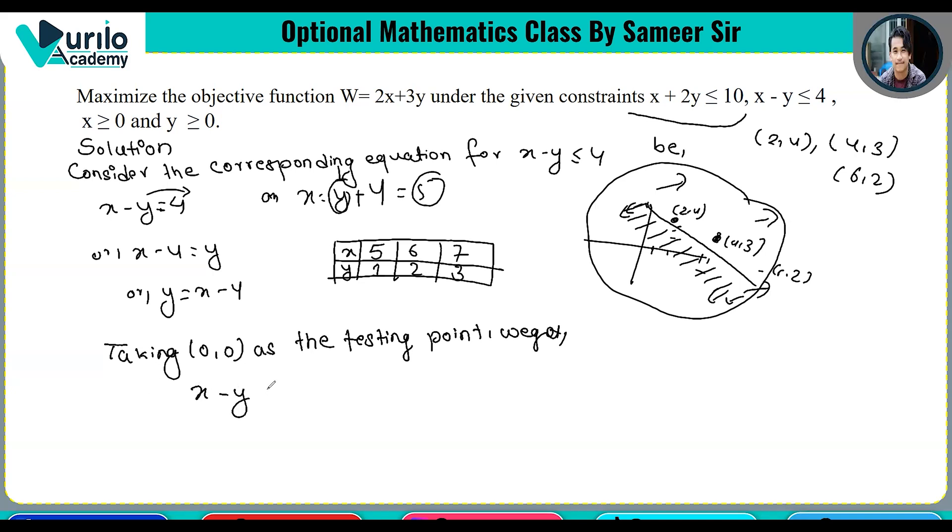Testing the origin: x minus y is less than equals to 4. Zero minus zero equals zero, which is less than or equals to 4. This statement is also true.